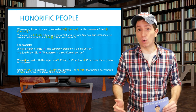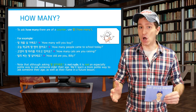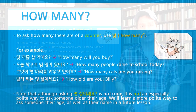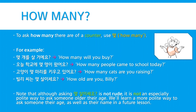Let's learn one more very important word often used together with counters: 몇, meaning how many. For example: 몇 개를 살 거예요 — How many will you buy? 오늘 학교에 몇 명이 왔어요 — How many people came to school today? 고양이 몇 마리를 키우고 있어요 — How many cats are you raising? 빌리 씨는 몇 살이세요 — How old are you, Billy? Note that although asking 몇 살이세요 is not rude, it is also not an especially polite way to ask someone older their age. In a future lesson, we'll learn a more polite way to ask someone their age and name.